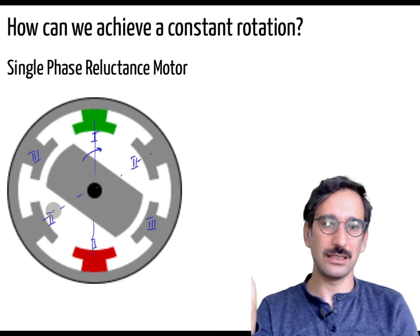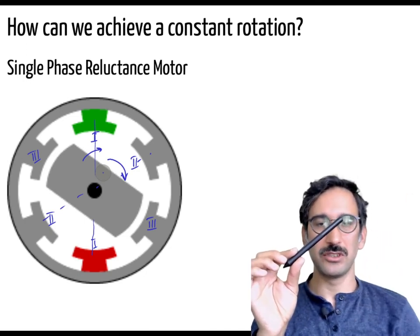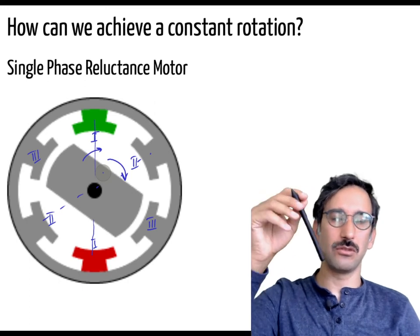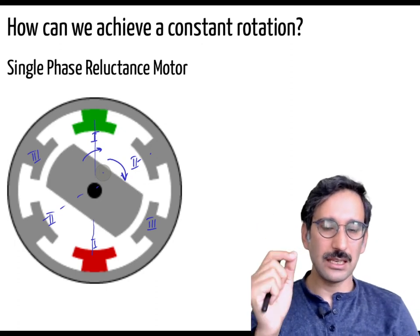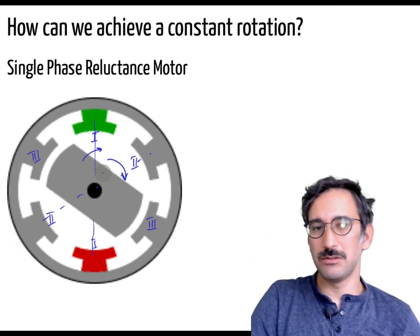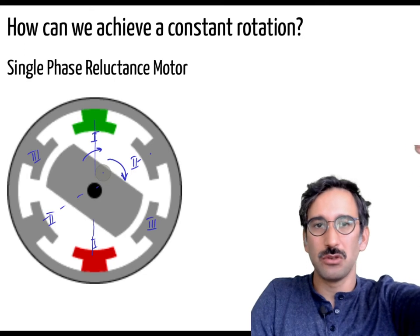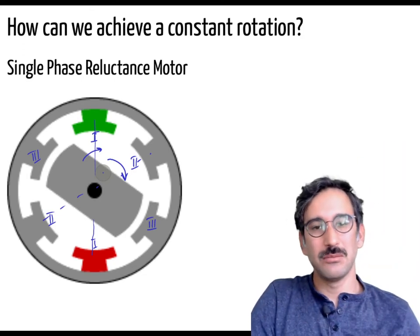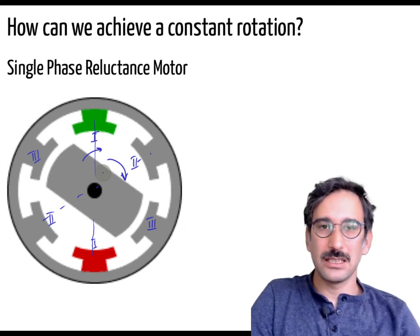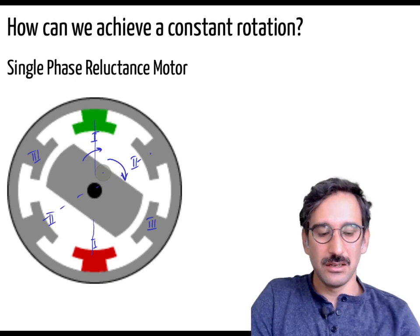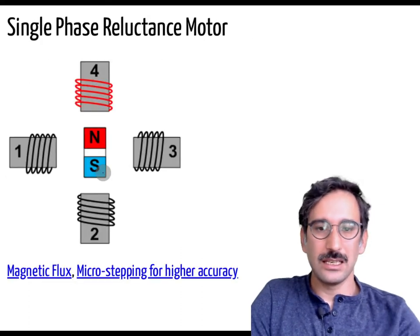Once aligned with one set of coils, you excite the next set so the rotor moves to the next position, then excite set three, and then return to set one — it just keeps going. The analogy is a donkey and a carrot: you show the carrot but keep taking it away. This is the main idea behind an AC motor or machine — we will discuss this analogy a lot in the following weeks.